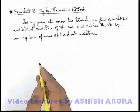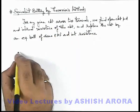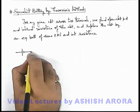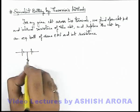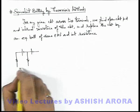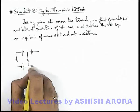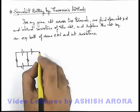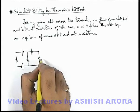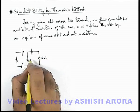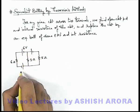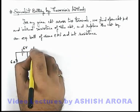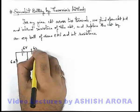Let me explain the same with the help of a simple example. Let us first draw a circuit — it is a general circuit which consists of some batteries and some resistances. Say the resistances are 5 ohm, 3 ohm, and 6 ohm. This is a 6 volt battery, this is a 4 volt battery, and this is also a 4 volt battery.